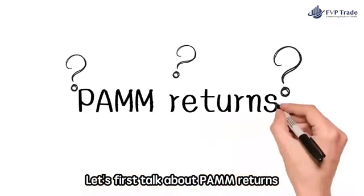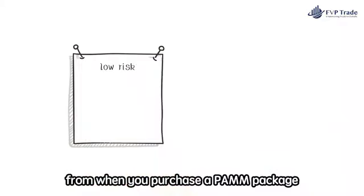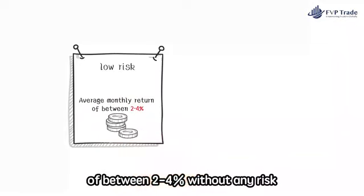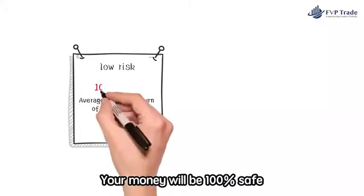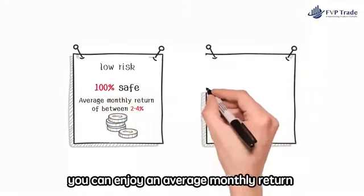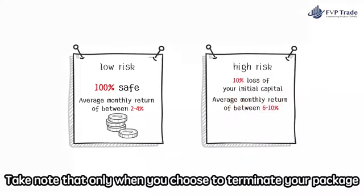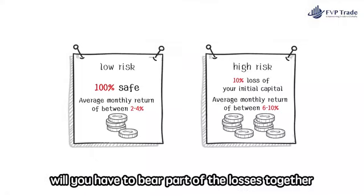Let's first talk about PAM returns. There are 3 risk options you can choose from when you purchase a PAM package. If you choose low risk, you can enjoy an average monthly return of between 2 to 4% without any risk — any losses incurred will be borne by the company, and your money will be 100% safe. If you choose high risk, you can enjoy an average monthly return of between 6 to 10% with a maximum 10% loss of your initial capital.